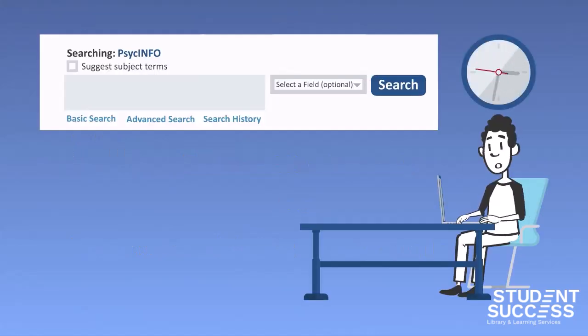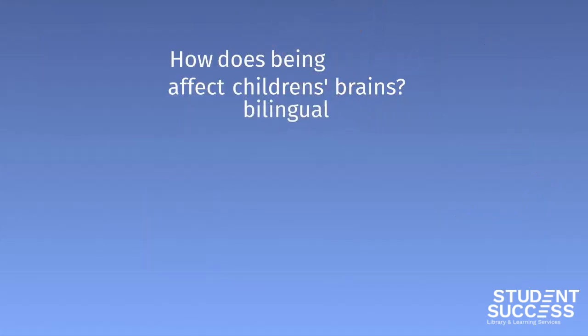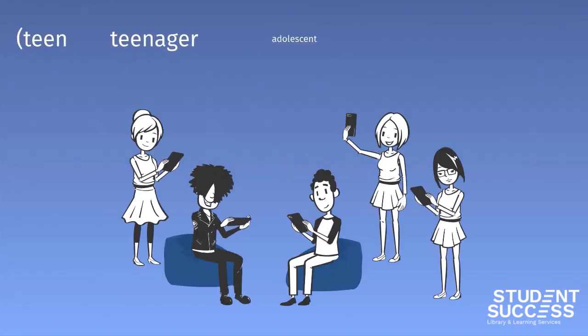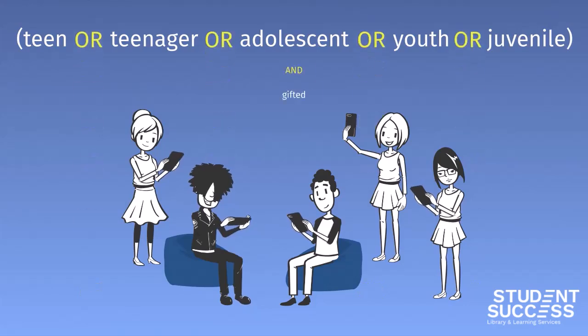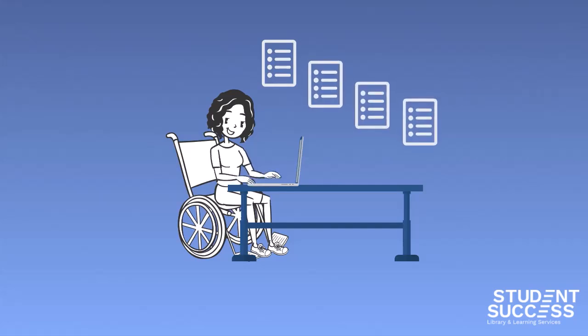So next time you need to use a library database, save yourself time, effort, and frustration by following these steps. Enter only those words that are directly related to concepts in your research question. Eliminate words that are not relevant. Come up with synonyms and other words related to your keywords. Put them together with ANDs and ORs. This will give you results that are much more relevant than if you just pasted the question into the search box.